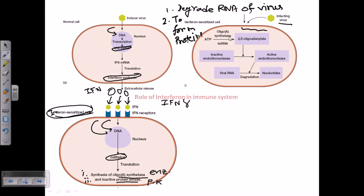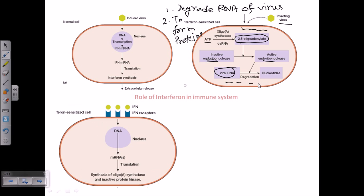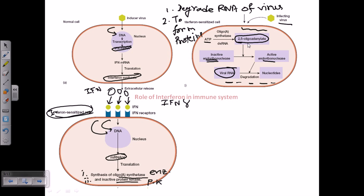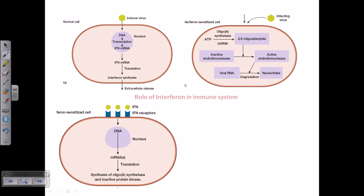For the first mechanism, the oligo-A-synthetase acts on ATP and converts it into 2-5 oligoadenylate. This 2-5 oligoadenylate then acts on inactive endoribonuclease — an enzyme that degrades mRNA from the middle by cleaving RNA. The activated endoribonuclease chops up viral RNA into smaller fragments so the virus cannot package its genetic material.